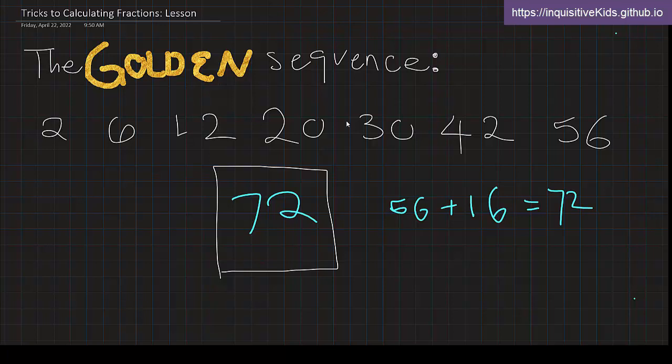What times 2 equals 2? 1 times 2. What times what equals 6? Yeah, I know there's 1 times 6, but that's not going to really help us. 2 times 3. Wait. 1, 2. 2, 3.